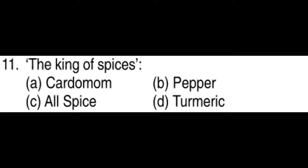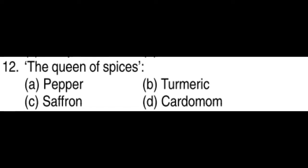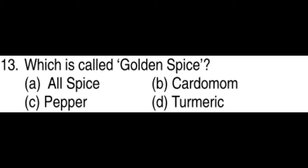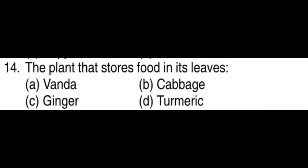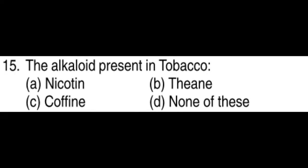The king of spices is pepper. The queen of spices is cardamom. Which is called the golden spice? Turmeric. The plant that stores food in its leaves is cabbage.